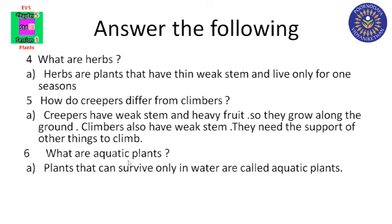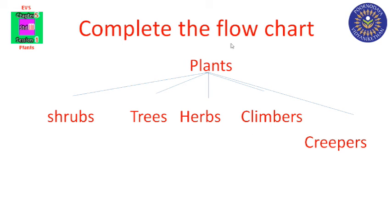Sixth, what are aquatic plants? Plants that can survive only in water are called aquatic plants. Next exercise: complete the flow chart. Plants — shrubs, trees, herbs, climbers, creepers. You have to write the different types of plants.